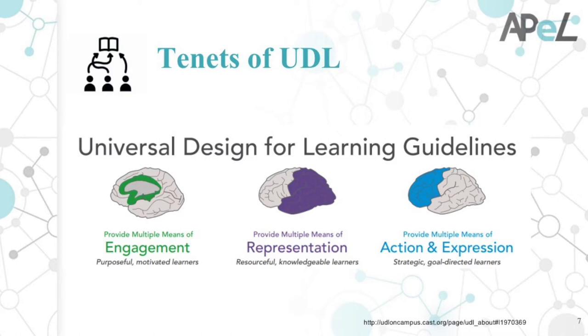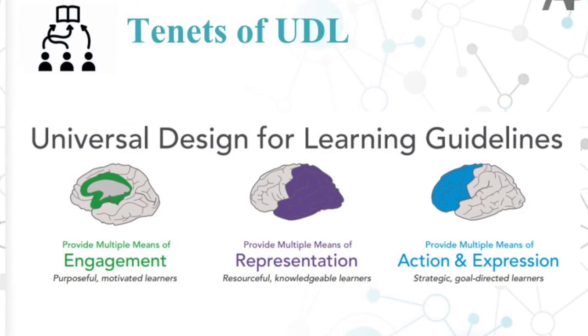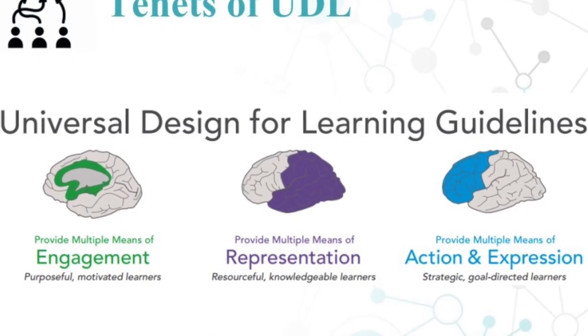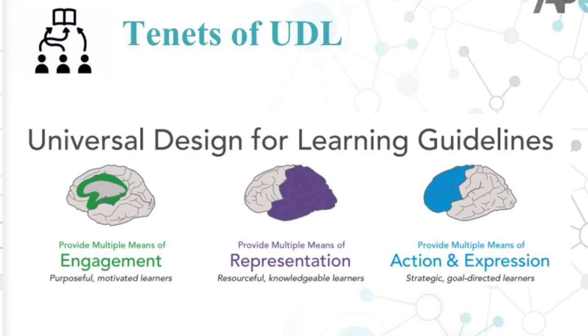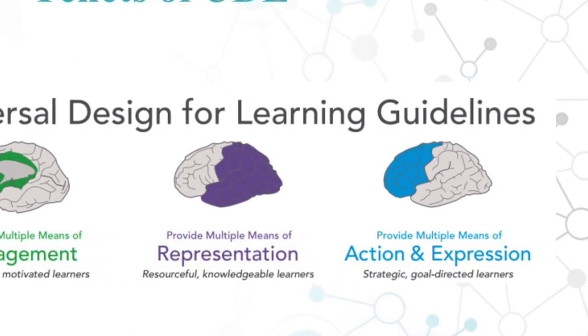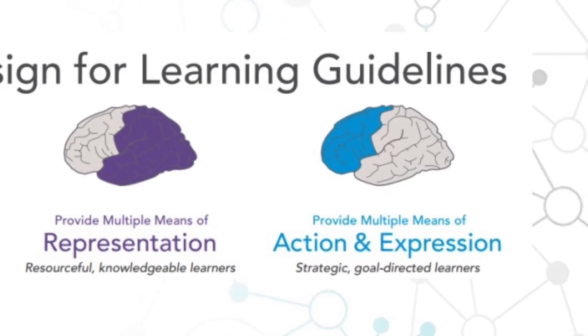The first tenet — the green one — is engagement: how students interact with the material and content, how they process it, critically think, digest and dissect. Multiple means of representation has to do with how that content is available to them, in terms of mode, modality, and formats. And finally, action and expression has to do with how students demonstrate their learning — how they show their achievement, what evidence is provided, and what options are there. Those are the three basic tenets.